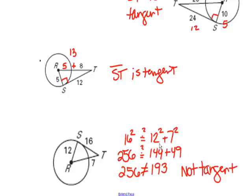In that problem, the sum of the squares of the two legs does not equal the square of the hypotenuse. Therefore, ST cannot be tangent because this is not a right angle.